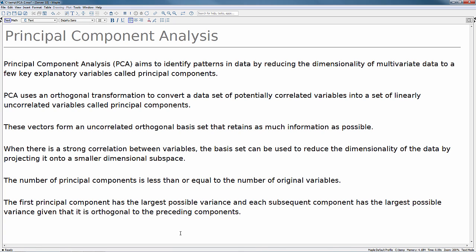When there is a strong correlation between variables, the basis set can be used to reduce the dimensionality of the data by projecting it onto a smaller dimensional subspace. The number of principal components is less than or equal to the number of original variables. The first principal component has the largest possible variance, and each subsequent component has the largest possible variance given that it is orthogonal to the preceding components. You can read more about principal component analysis in Maple's help pages.